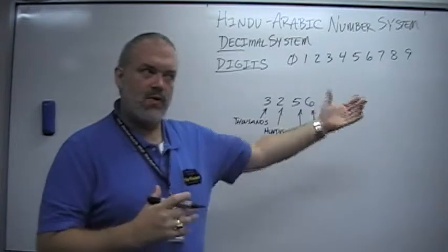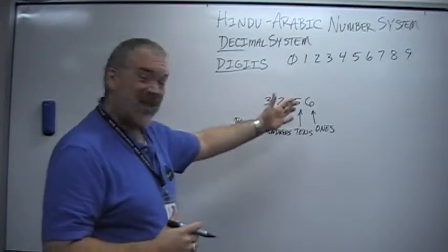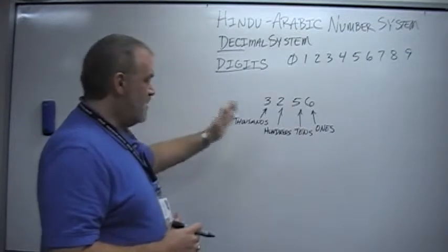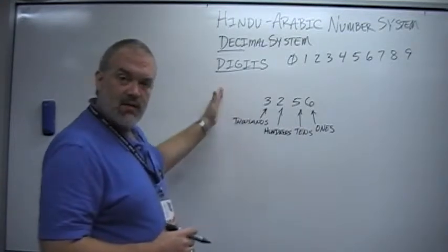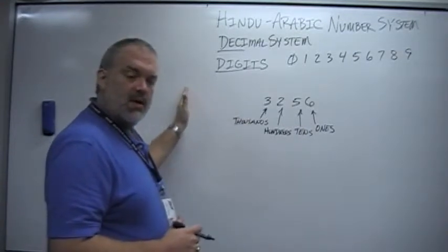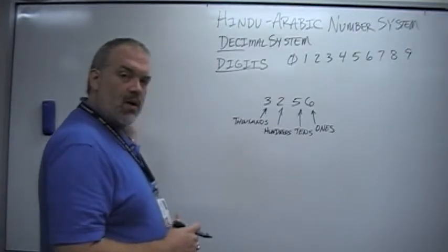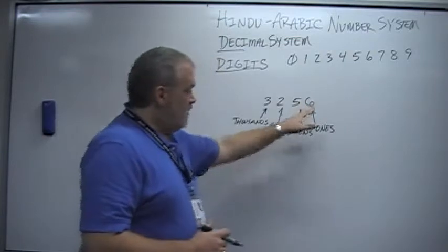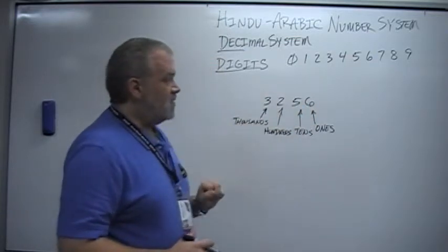Those are those places. And as we go further and further to the left, those numbers get bigger: ten thousands, hundred thousands, millions, ten millions, hundred millions, billions, and so on. We'll talk about numbers to the right another day, but for this purpose, that's what each of those are.